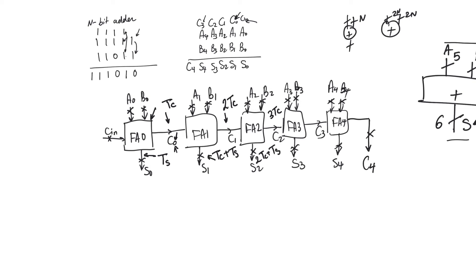Carry C3 is ready at 4TC. And sum S3 is ready at 3TC plus TS. C4 is ready at 5TC. And S4 is ready at 4TC plus TS. So you have the outputs S0, S1, S2, S3, S4, and C4. Which of them is ready the last?